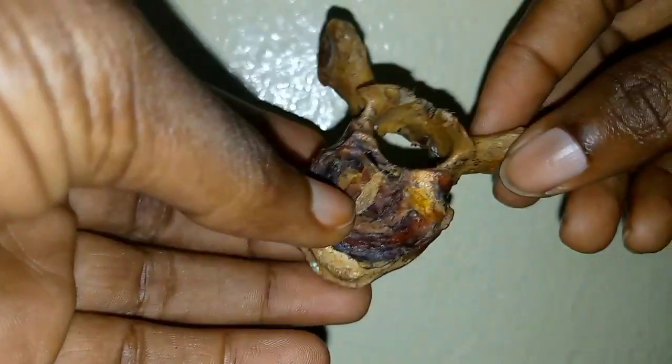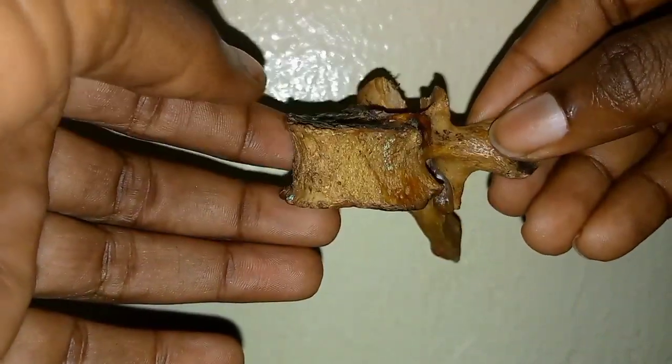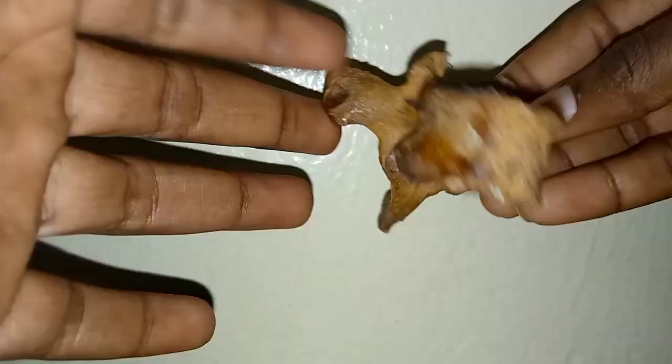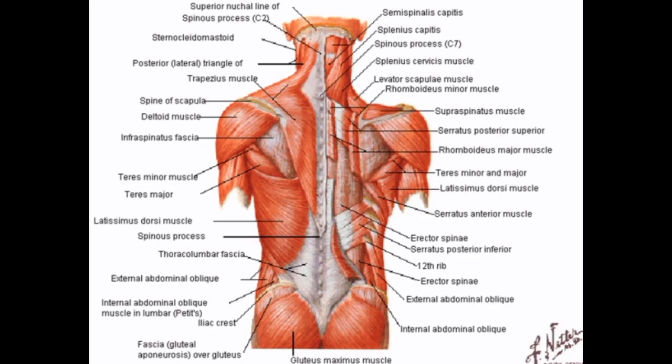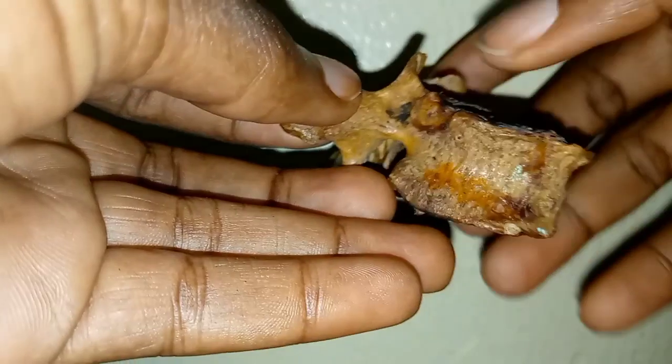That covers a typical thoracic vertebra. Check out my other videos to understand the differences between the thoracic and lumbar vertebrae so you can identify and differentiate them.